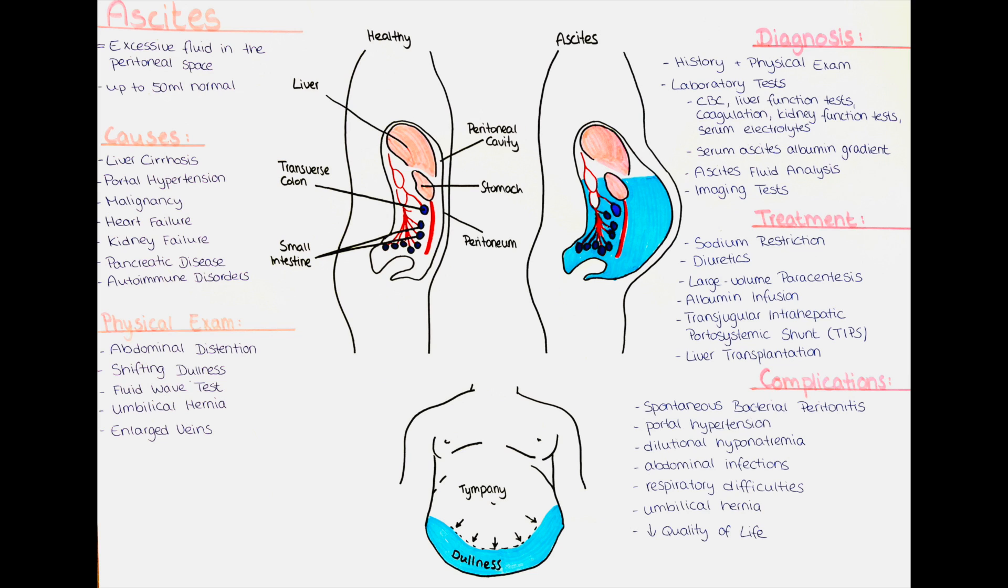We can also obtain different imaging studies. The least invasive imaging study to perform is the abdominal ultrasound. We use this to assess the liver size and morphology. We also want to check for the presence of liver lesions and to evaluate for portal hypertension-related findings, like splenomegaly or collateral blood supply.